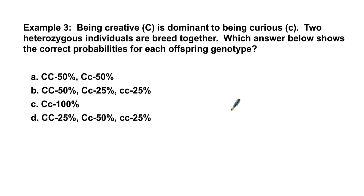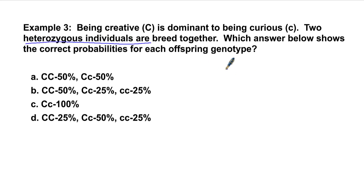Example three: Being creative, big C, is dominant to being curious, little c. Two heterozygous individuals are bred together. Which answer shows the correct probabilities for each offspring genotype? Remember, genotype means we want the letters. We're crossing big C, little c with big C, little c.